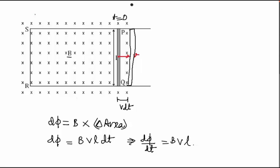Similarly we can say that induced EMF, that would be E, will be equal to d phi by dt which is nothing but b v l. Now this will be the answer to our first part.